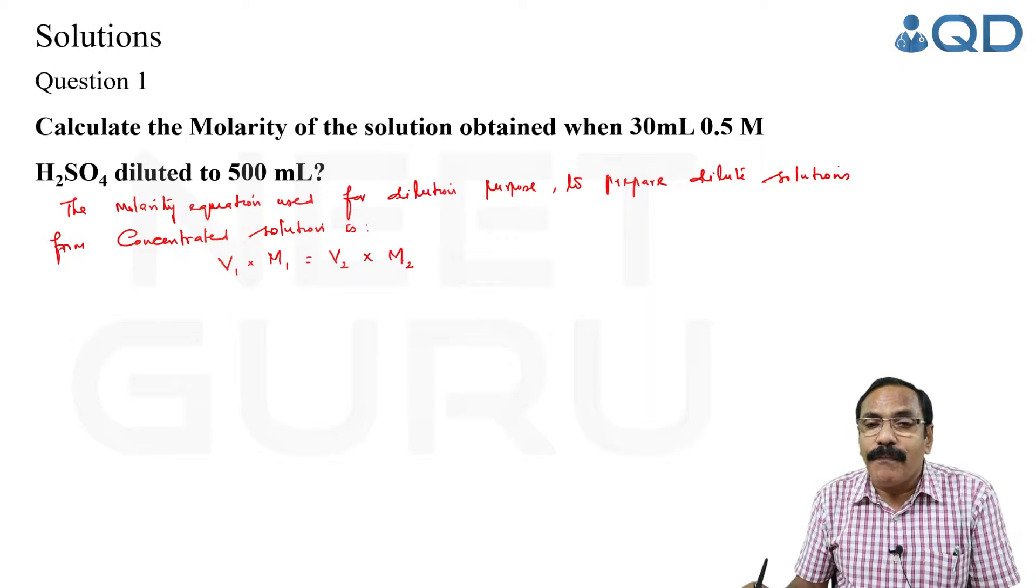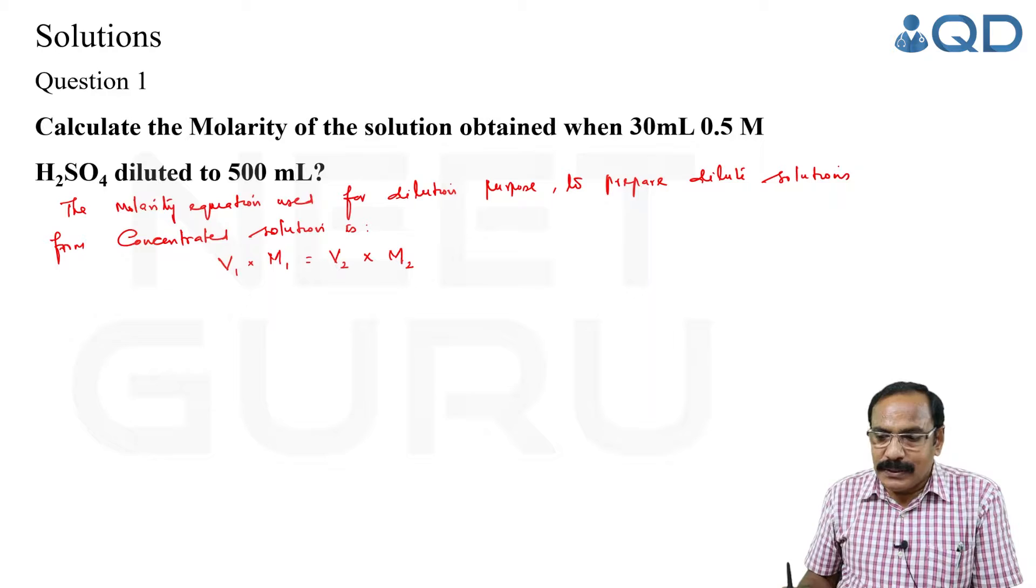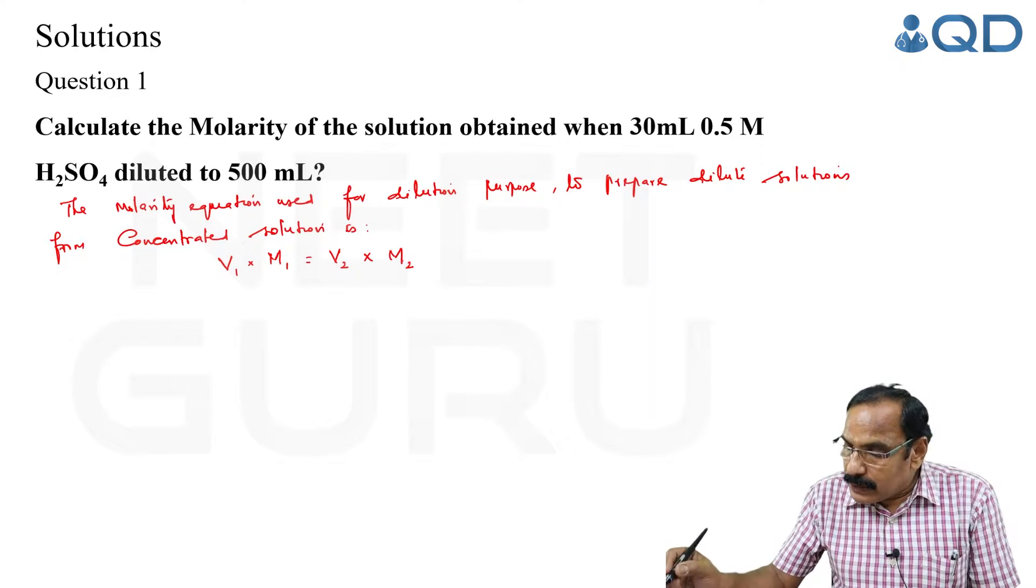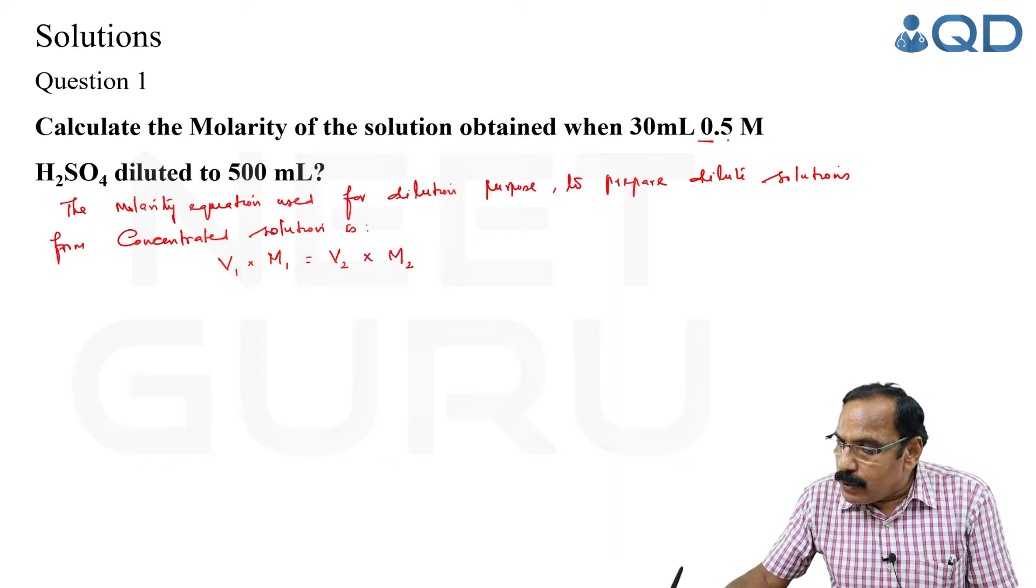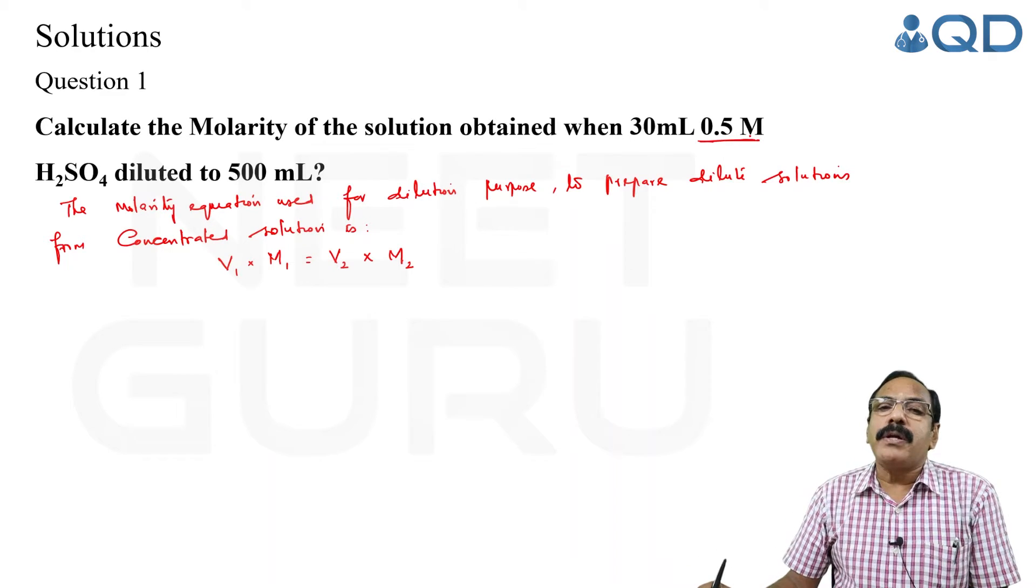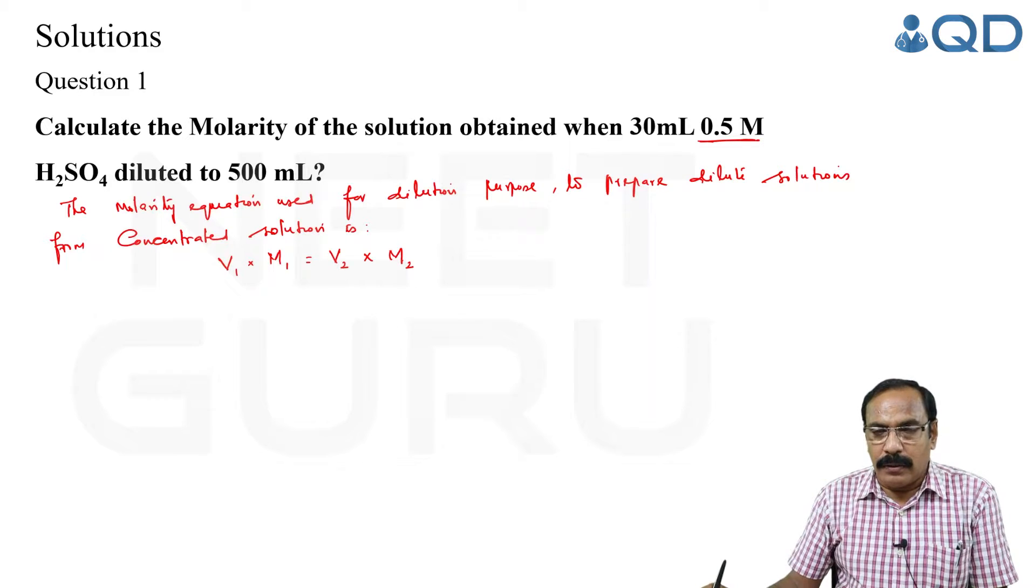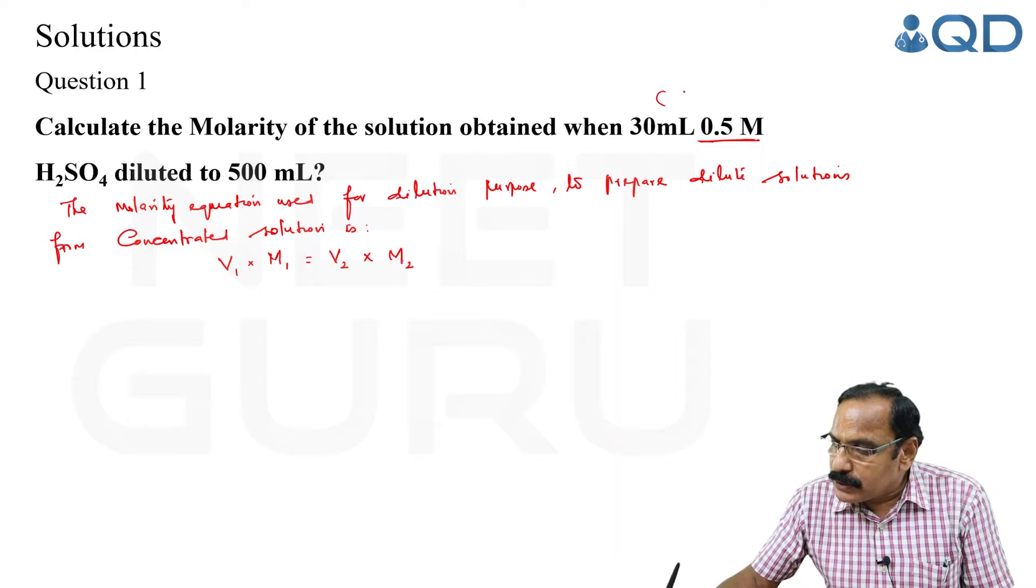So calculate the molarity of solution obtained when 30 mL of 0.5 M - note that 0.5 molar solution is called semi-molar or hemi-molar.